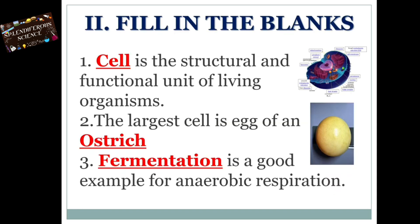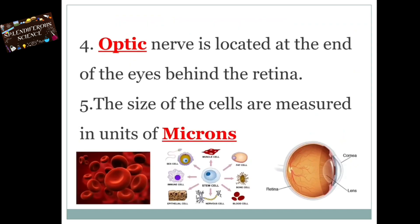Fill in the blanks: First one — cell is the structural and functional unit of living organisms. Second one — the largest cell is the egg of an ostrich. Third — fermentation is a good example for anaerobic respiration. Fourth — optic nerve is located at the end of the eyes behind the retina. Fifth — the size of the cells is measured in units of microns.